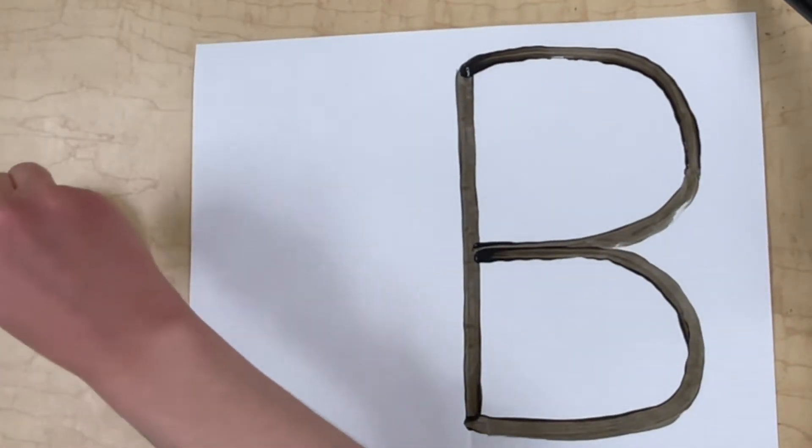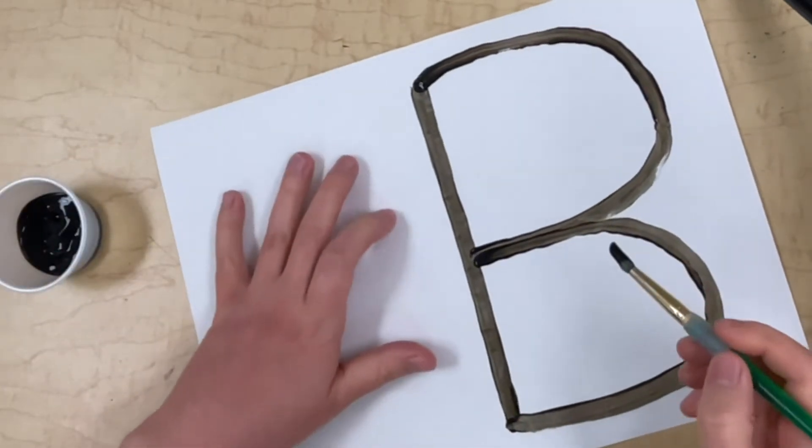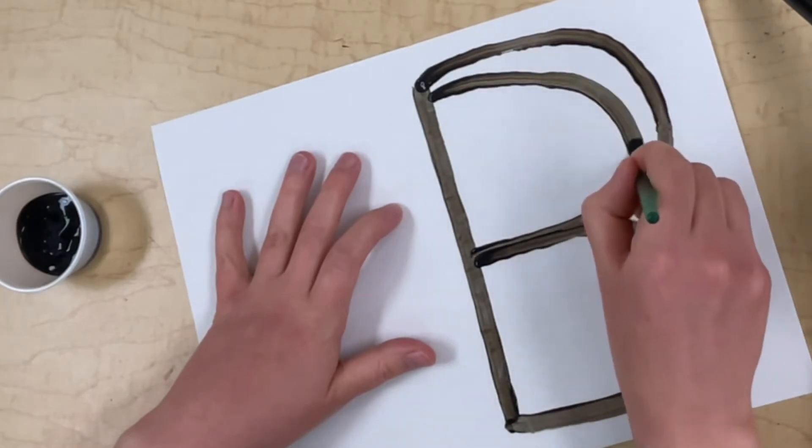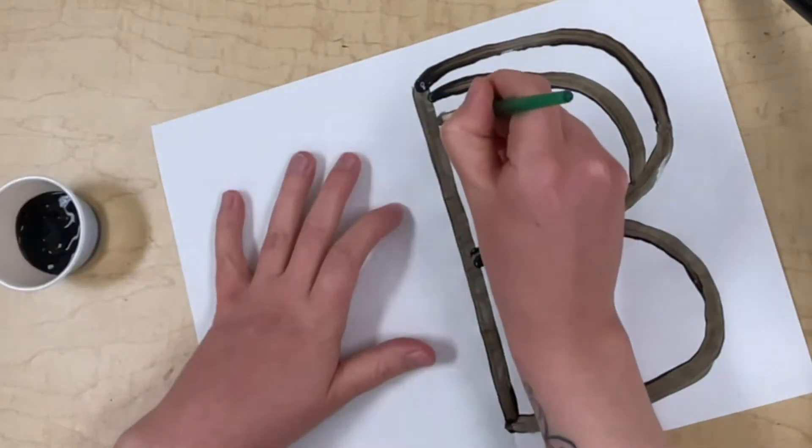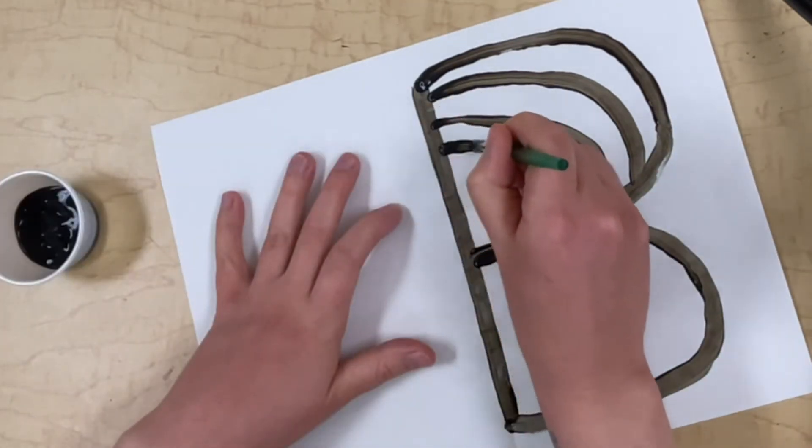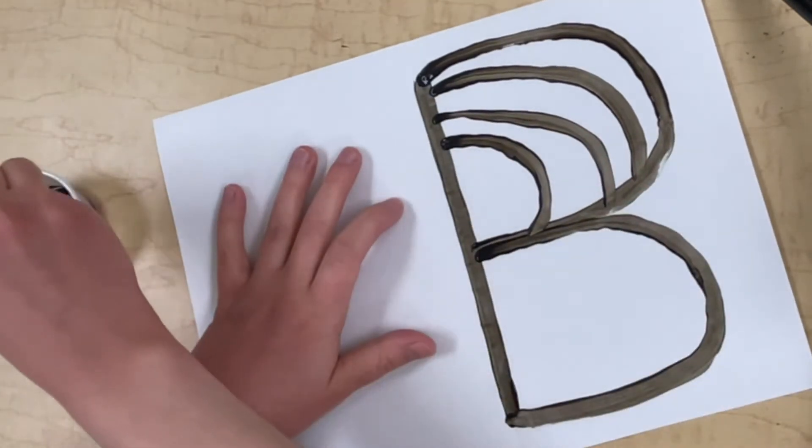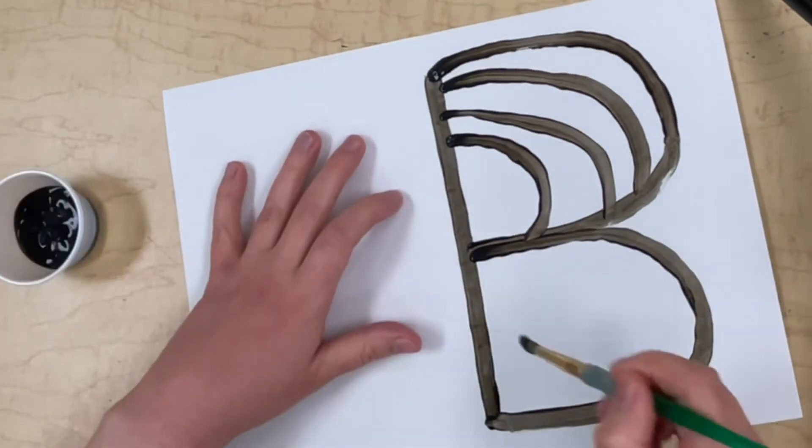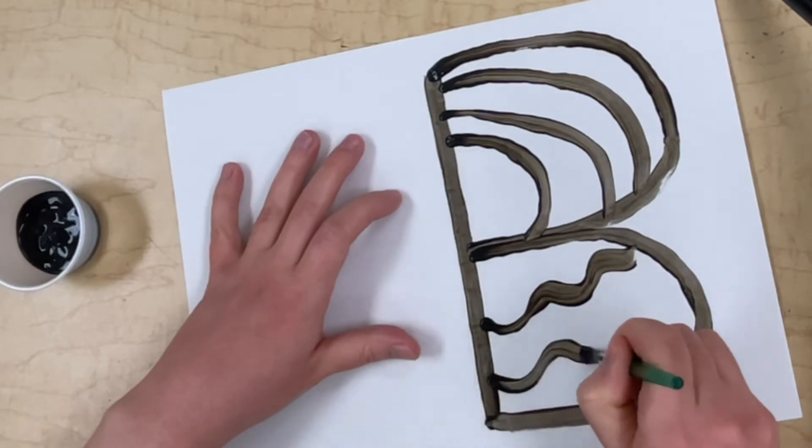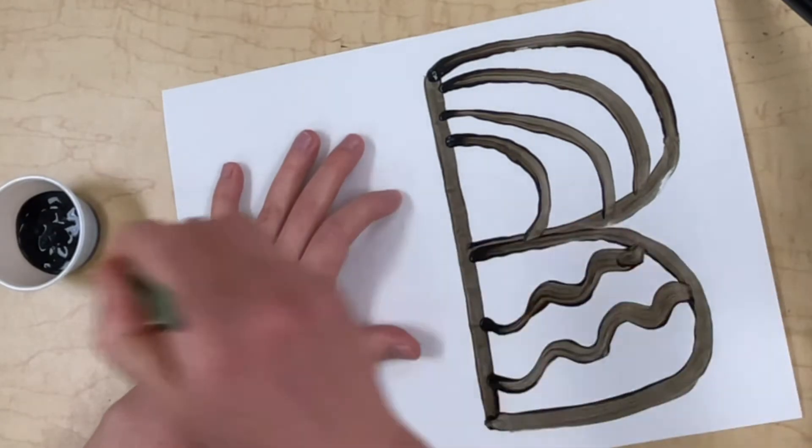Now it's time to add a pattern. Butterfly wings have patterns on them. Patterns are elements of art that repeat. So I am going to do a pattern of curved lines here, some repeating curved lines on the top half of the wing. Then I'm going to do a pattern of wavy lines on the bottom half of the wing.